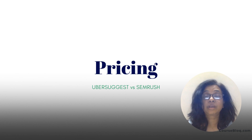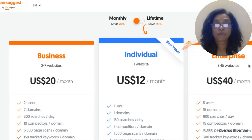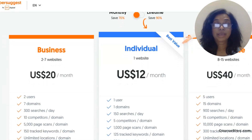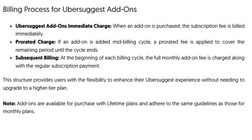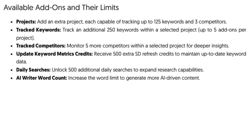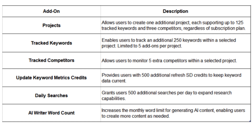Pricing shouldn't really drive your decision when it comes to investing in a tool you rely on heavily for your online business. But when you're running your business on a tight budget, it does become an important factor. Ubersuggest is definitely more affordable than SEMrush, which is why it's a good place to start if you're on a budget. It also gives you the option of getting add-ons whenever you need more, helping you grow your account as you grow your business.